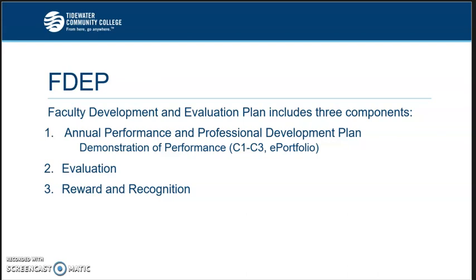There are three components to your FDEP. The first is the Annual Performance and Professional Development Plan, otherwise known as the APPDP, which includes your demonstration of performance. That can be found in the FDEP Policy Manual in Appendix C1 through C3, and it also includes demonstrating your performance on the ePortfolio, which TCC has developed so deans and directors can evaluate faculty. The second part is evaluation by your dean or director, and the third part is the TCC Reward and Recognition Program.